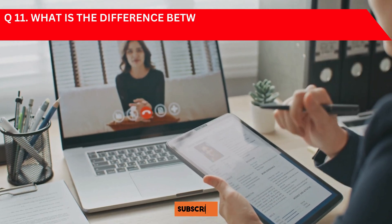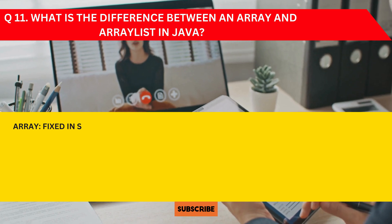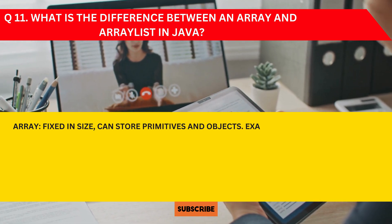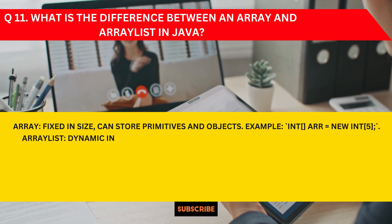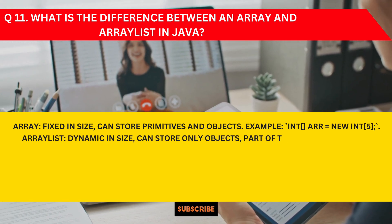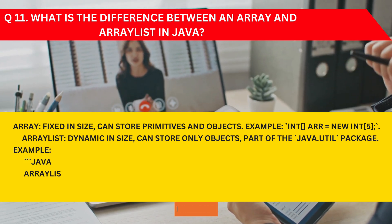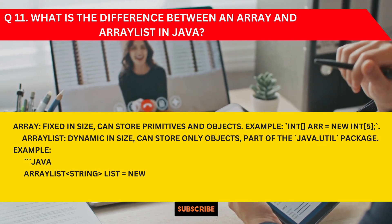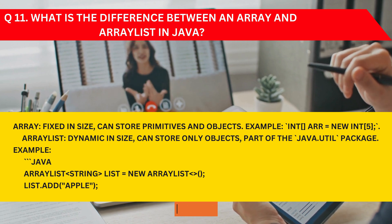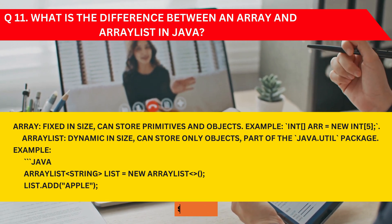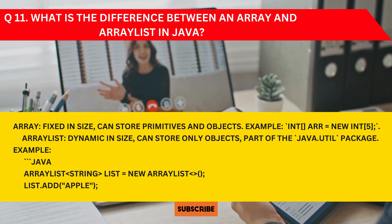Question 11: What is the difference between an array and ArrayList in Java? An array is fixed in size and can store primitives and objects. An ArrayList is dynamic in size, can store only objects, and is part of the java.util package. Code snippets are provided — please refer to them to understand better.